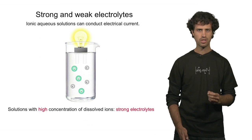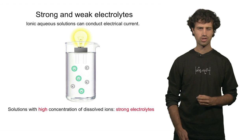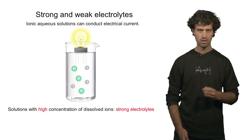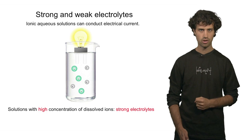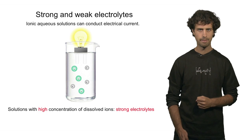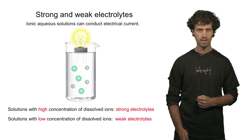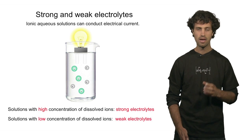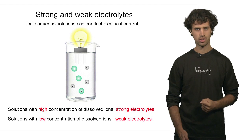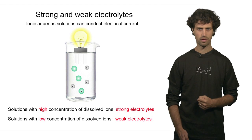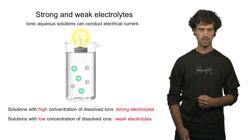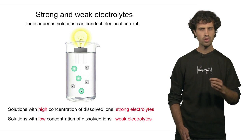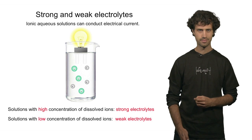We will call solutions with a high concentration of dissolved ions strong electrolytes because they can conduct current very well. Vice versa, we will call solutions with a low concentration of dissolved ions weak electrolytes because they do not conduct current very well.